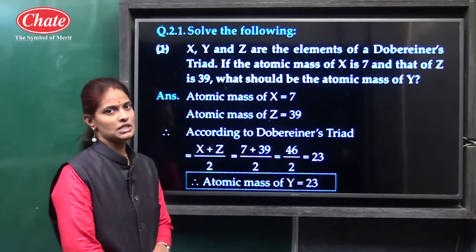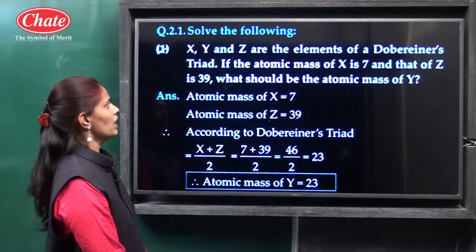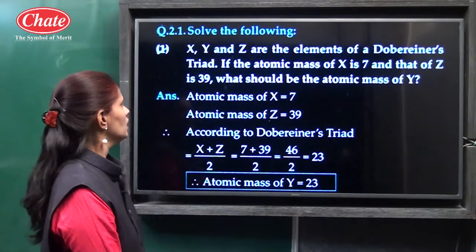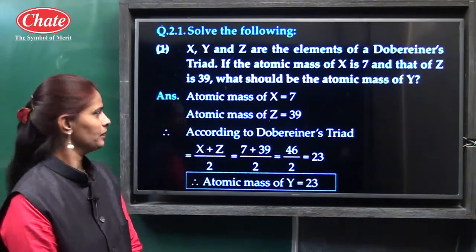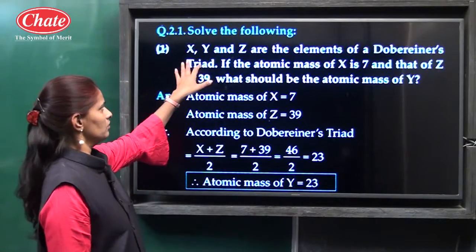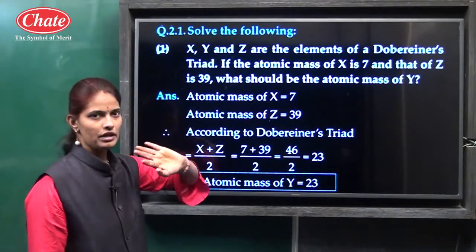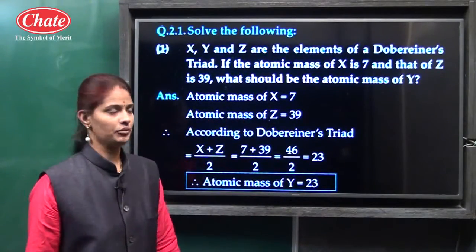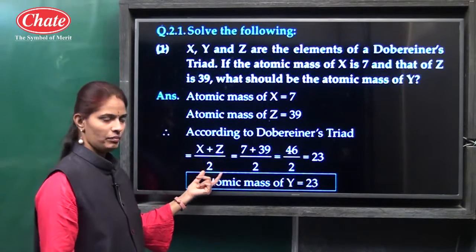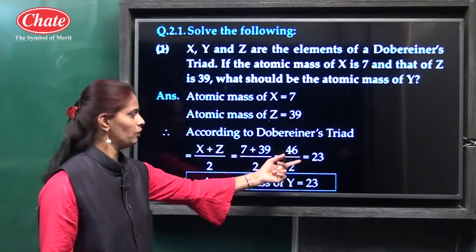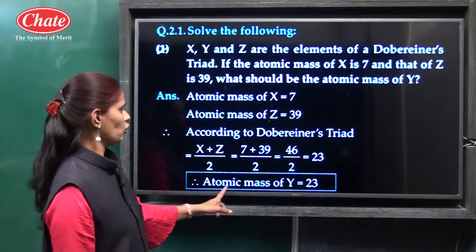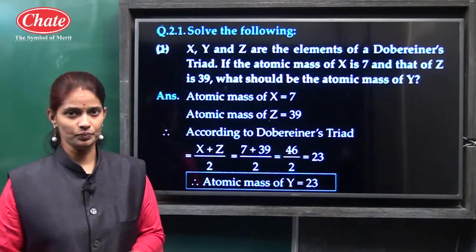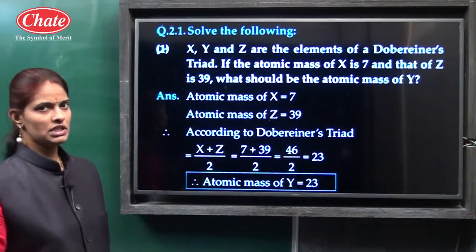Then solve the following: X, Y, and Z are elements of a Dobereiner triad. If the atomic mass of X is 7 and that of Z is 39, what should be the atomic mass of Y? According to Dobereiner's triad, atomic mass of Y = (X + Z) / 2 = (7 + 39) / 2 = 46 / 2 = 23. So the atomic mass of Y is 23, because the atomic mass of the middle element is approximately equal to the mean of the atomic masses of the other two elements.